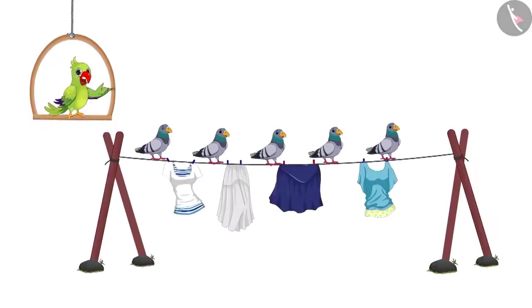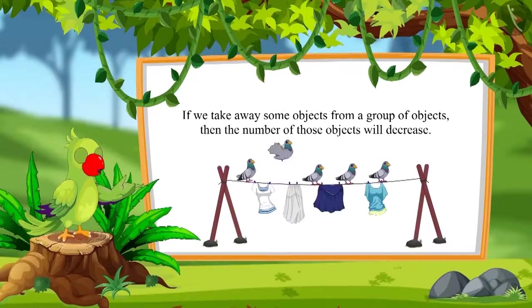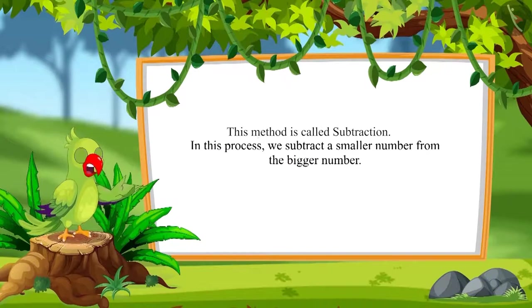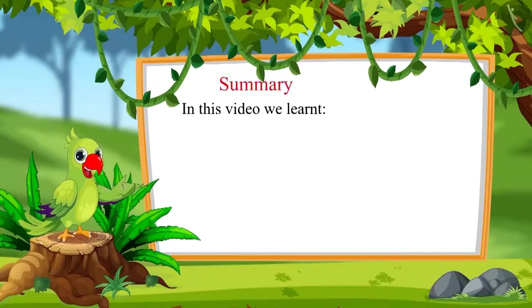Come on, let's play now. So, children, you saw how the number of pigeons kept on decreasing. In this way, if we take away some objects from a group of objects, then the number of that object decreases. Do you know what this method is called? This method is called subtraction. In this process, we generally subtract a smaller number from the bigger number. That's all for today.